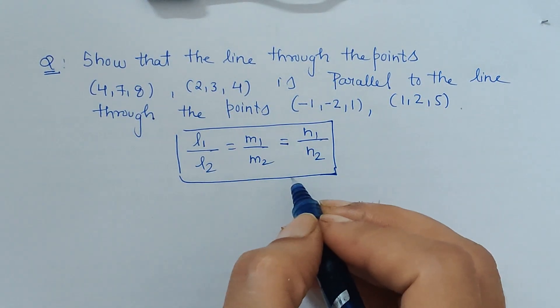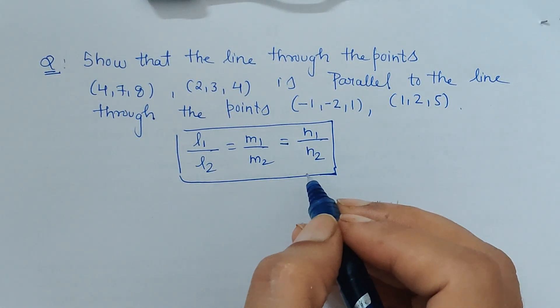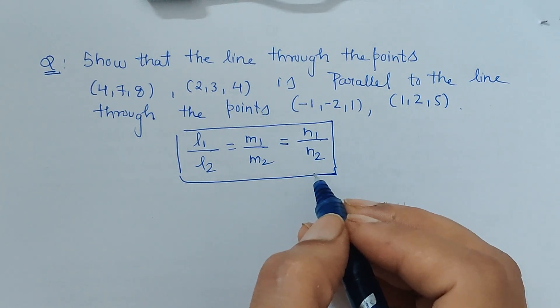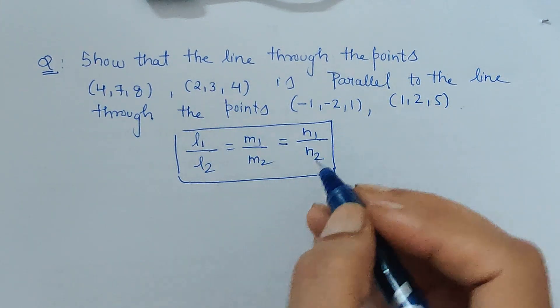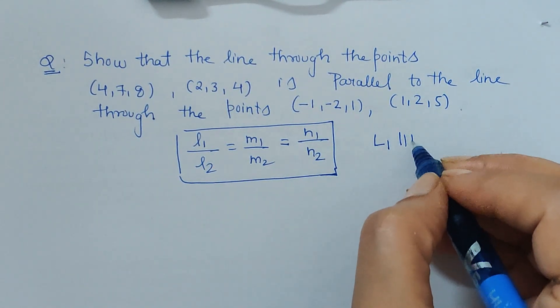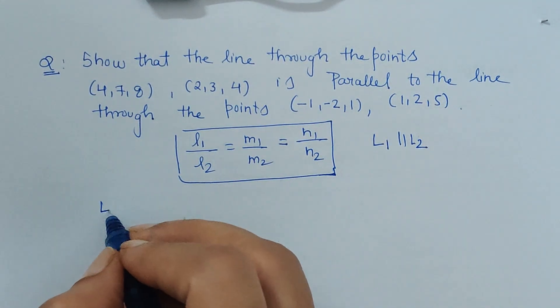In the previous question we have seen that the sum of the product of the direction ratios should be zero. But here, the ratio of the corresponding direction ratios should be equal. Only then we can say that the lines are parallel to each other - l1 is parallel to l2.